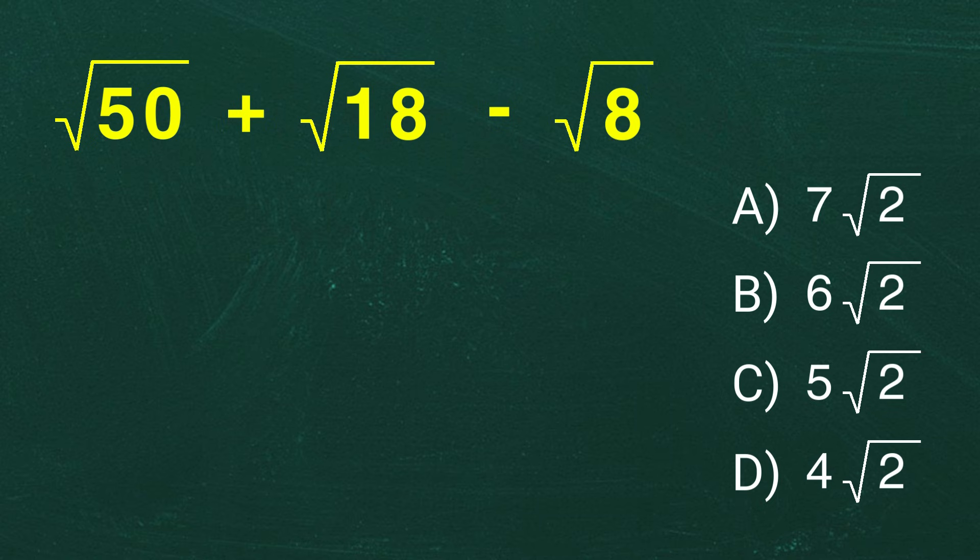All right, let's break it down step by step and see how you did. Our goal is to simplify this expression as much as possible. Simplifying square roots means we want to break them down into their simplest form, which usually involves factoring.